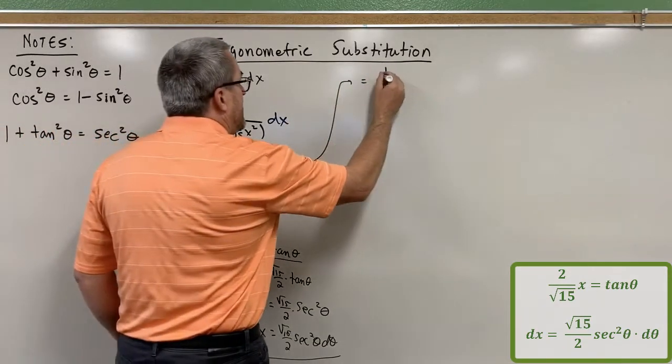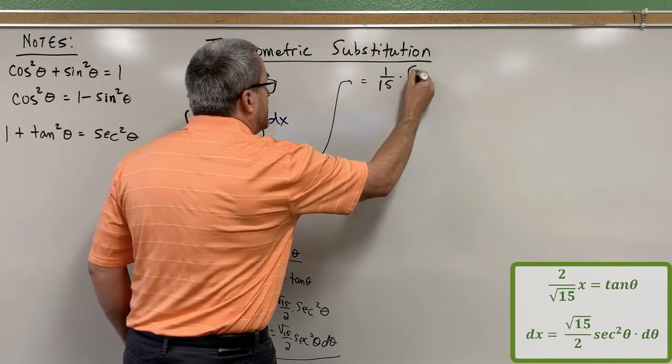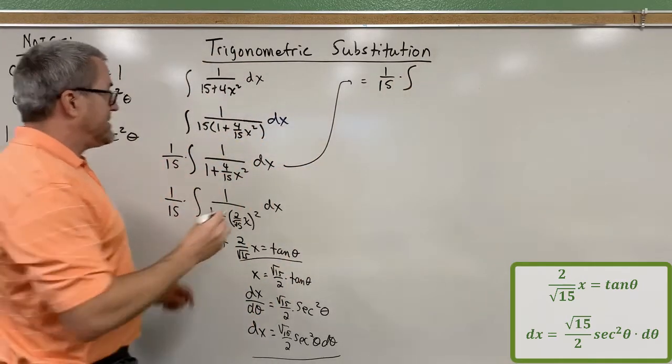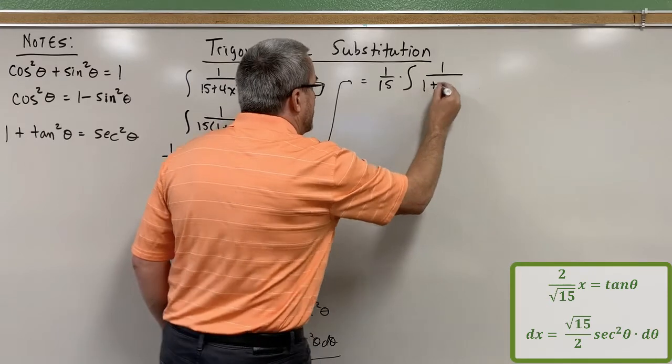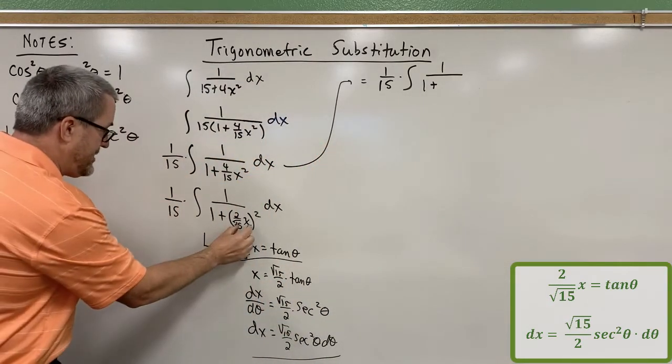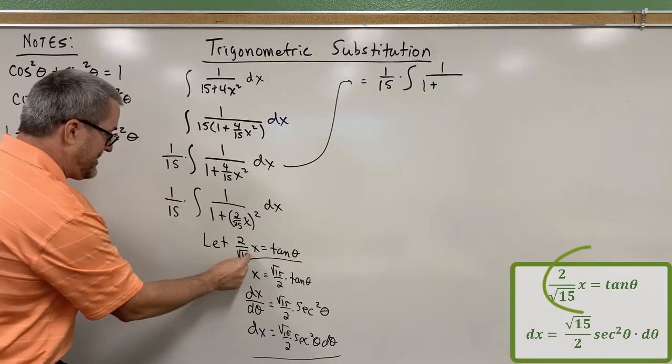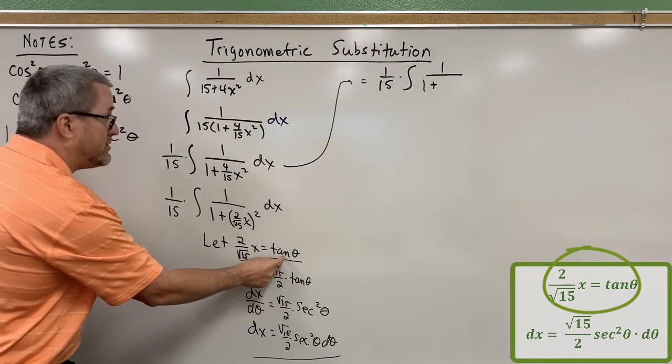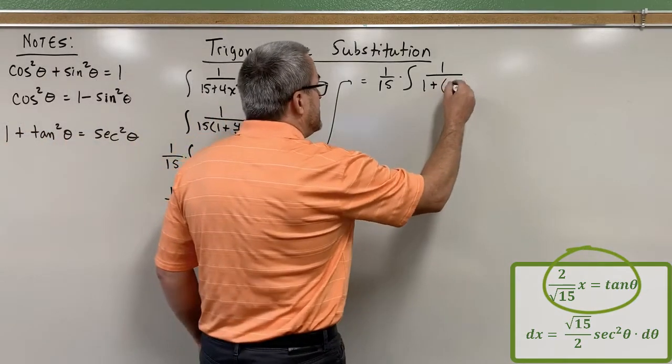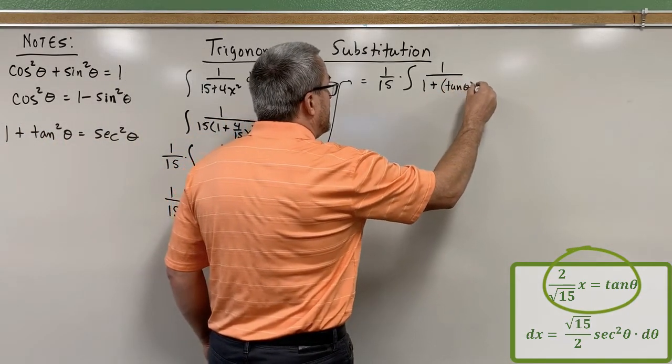Here's how it's going to be. Remember our 1 15th? That's still there. Our integral now is going to become 1 over 1 plus, now, this 2 over the square root of 15 times x is what we're allowing to be equal to tangent of theta. So instead, we're going to have tangent of theta squared.